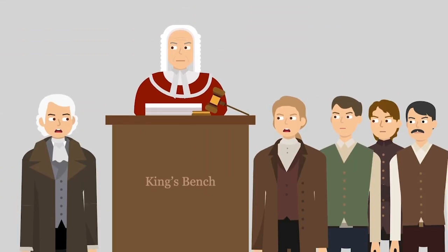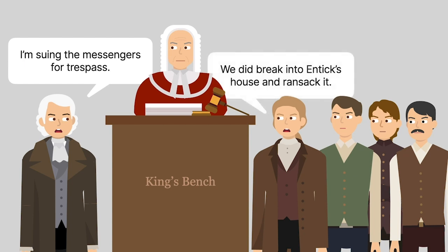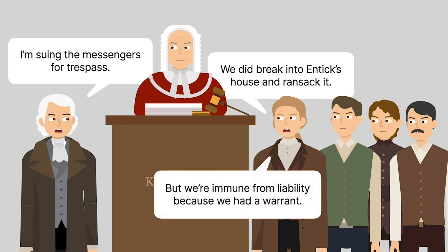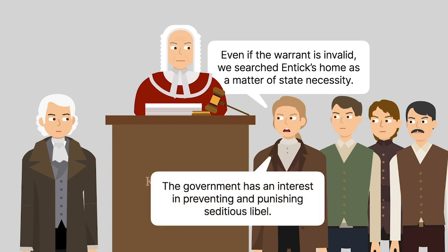After he was released from custody, Entick sued the messengers for trespass. The messengers admitted that they'd broken into Entick's house and ransacked it, but argued that they were immune from liability because they'd acted under a valid warrant. They further argued that even if the warrant was invalid, they'd searched Entick's home as a matter of state necessity because the government had an interest in preventing and punishing seditious libel.